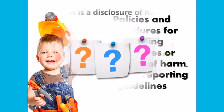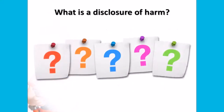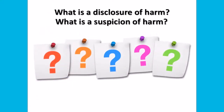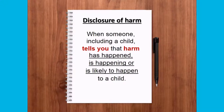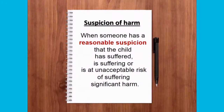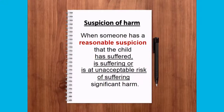So what is a disclosure of harm and what is a suspicion of harm? A disclosure of harm occurs when someone, including a child, tells you that harm has happened, is happening, or is likely to happen to a child. A suspicion of harm is when someone has a reasonable suspicion that the child has suffered, is suffering, or is at unacceptable risk of suffering significant harm.